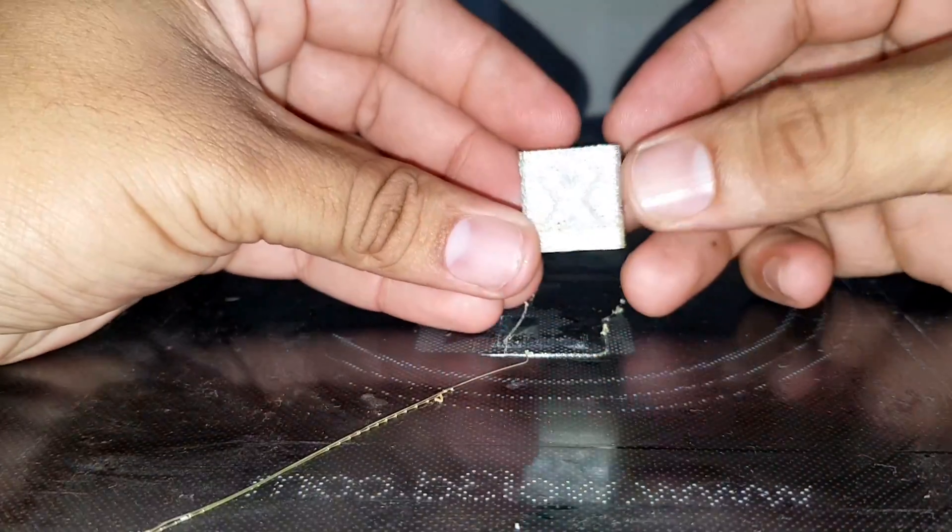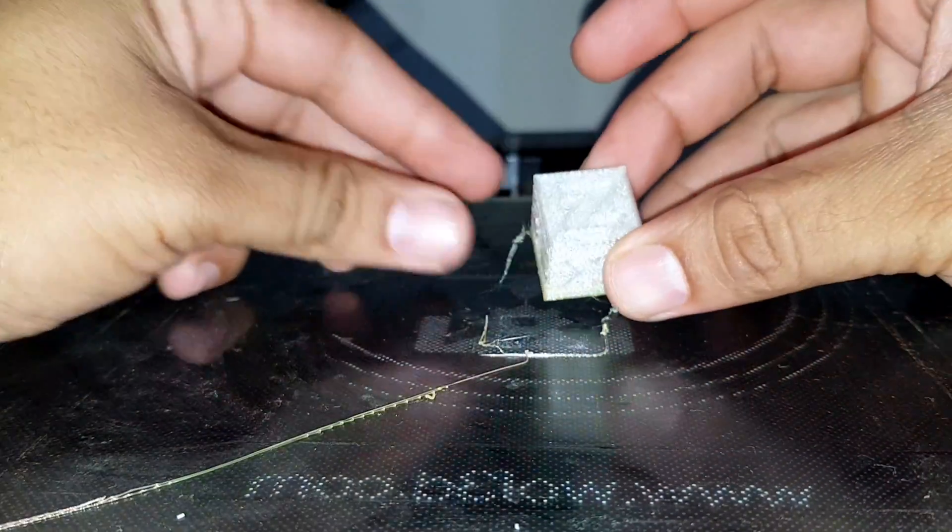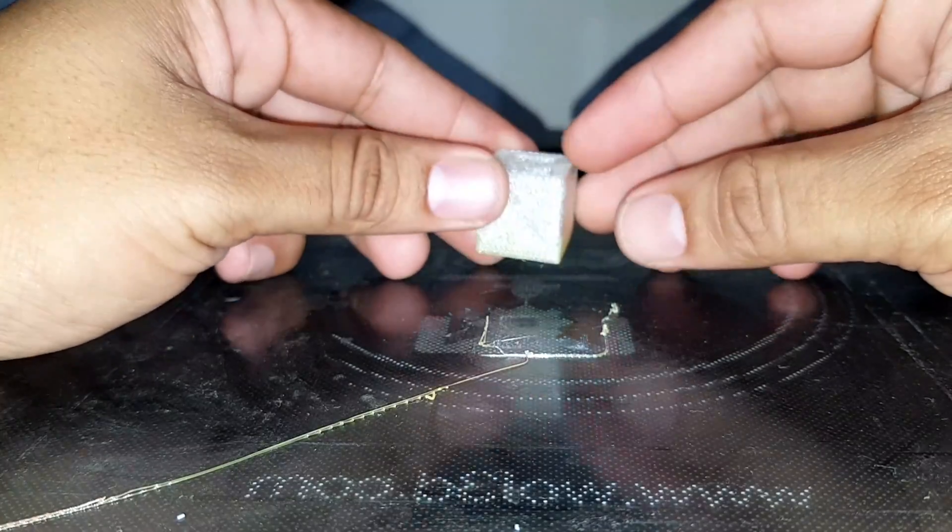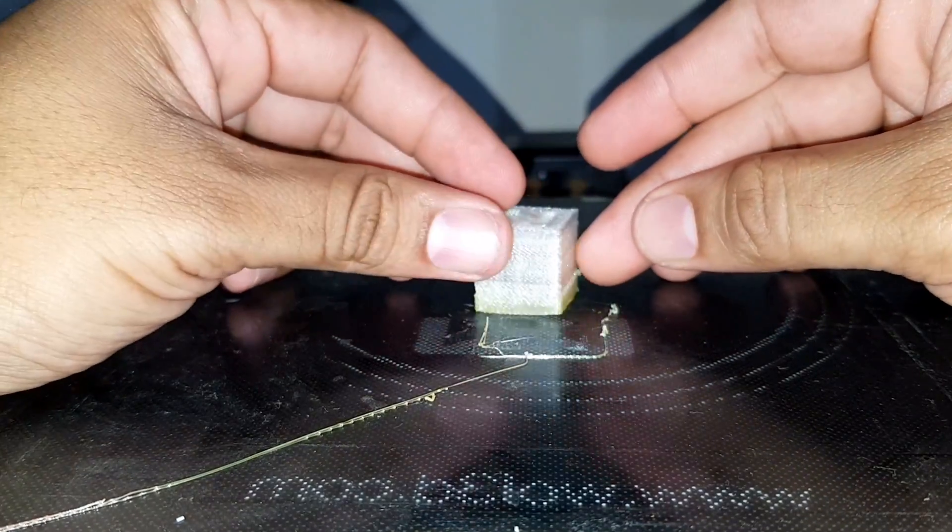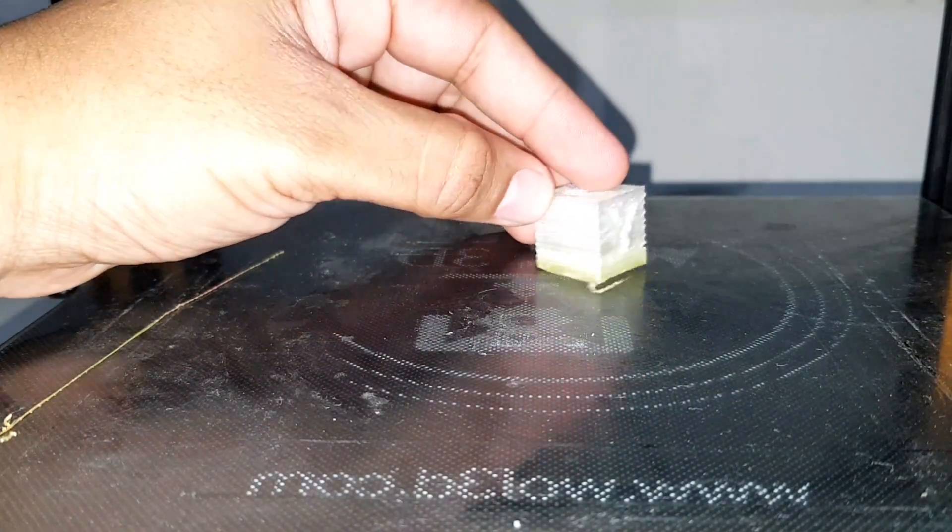As you can see, the cube is less dense as compared to what it should be. This is due to under extrusion. The filament I used was extruded from 1.5mm nozzle.